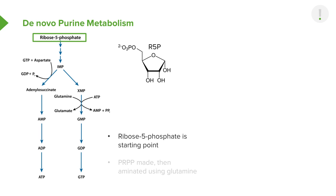Looking at the big picture, the starting molecule is ribose 5-phosphate, the source of the ribose pentose sugar. It takes several steps to go from ribose 5-phosphate to make an intermediate known as IMP, Inosine Monophosphate. IMP is a branch point — one branch ultimately making ATP, and the other making GTP. These are the two purine nucleotides. The point of IMP is one of the places where balancing occurs to make the proper amounts of each one.